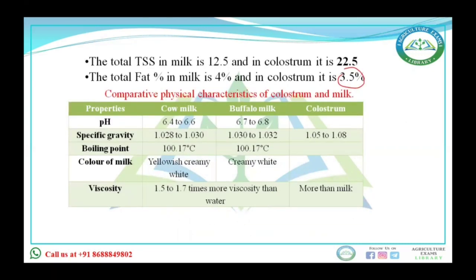Comparing physical characteristics of colostrum and normal milk of buffalo and cow: pH of cow milk is 6.4 to 6.6, while buffalo milk is 6.7 to 6.8. Specific gravity of cow milk is 1.028 to 1.030 and buffalo milk is 1.030 to 1.032. Boiling point of both cow and buffalo milk is 100.17 degrees Celsius. Color of cow milk is yellowish/creamy due to presence of carotene; buffalo milk is creamy white. Viscosity of both cow and buffalo milk is 1.5 to 1.7 times higher than water, and viscosity of colostrum is more than that of buffalo or cow milk.